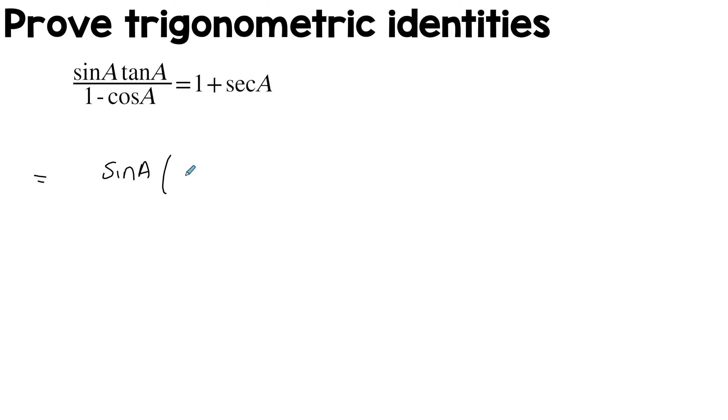So I have sine A and then this will be sine A over cos A. Just a warning, there will be a lot of fractions in here. So this whole thing over 1 minus cos A. I'll simplify this and I'm going to get sine squared A over cos A over again 1 minus cos A.